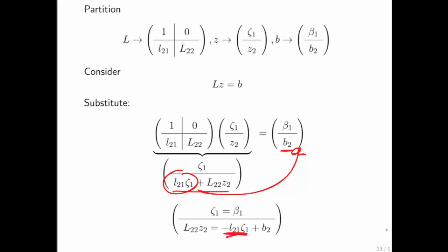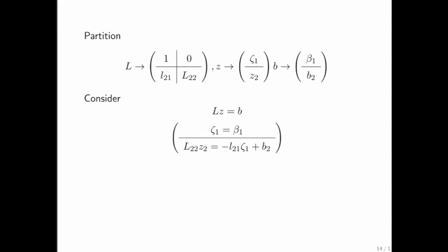All right, moving right along. We have this now, and the question now is how do we come up with an algorithm. Right here, it says zeta 1 is equal to beta 1. So we know how to compute the first element of vector z.